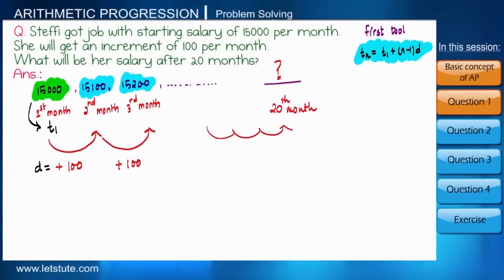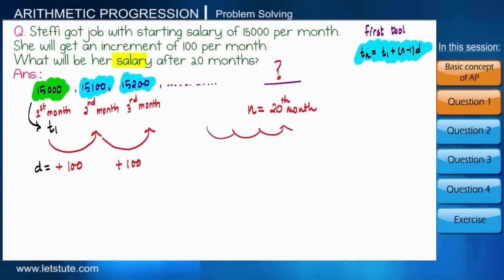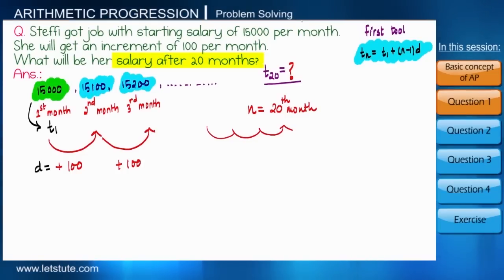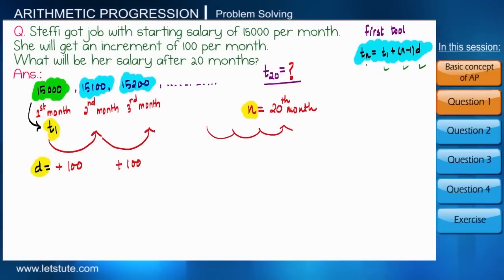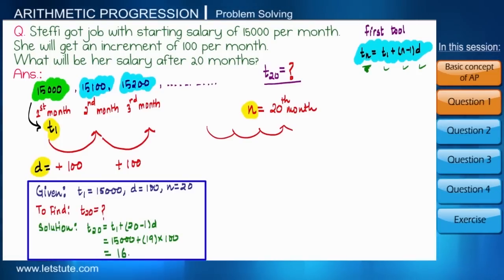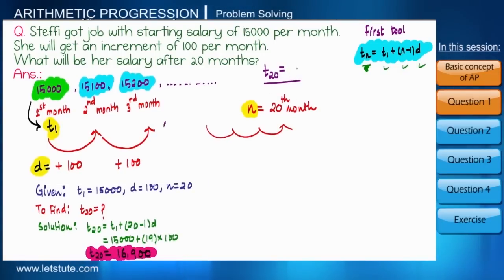We need to calculate her salary in the twentieth month. The position of the term is given — n equals 20 — and we have to find the value at that position, that is t20. We have three parameters t1, d, and n, so we can easily find the fourth parameter tn. It comes out to be sixteen thousand nine hundred, so her salary in the twentieth month will be sixteen thousand nine hundred.